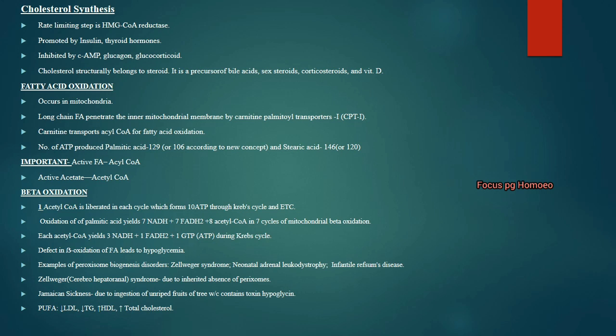Jamaican sickness is due to ingestion of unripe fruits of the ackee tree, which contains the toxin hypoglycin. Remember these two terms: Zellweger's syndrome due to absence of peroxisomes, and Jamaican sickness due to the toxin hypoglycin.